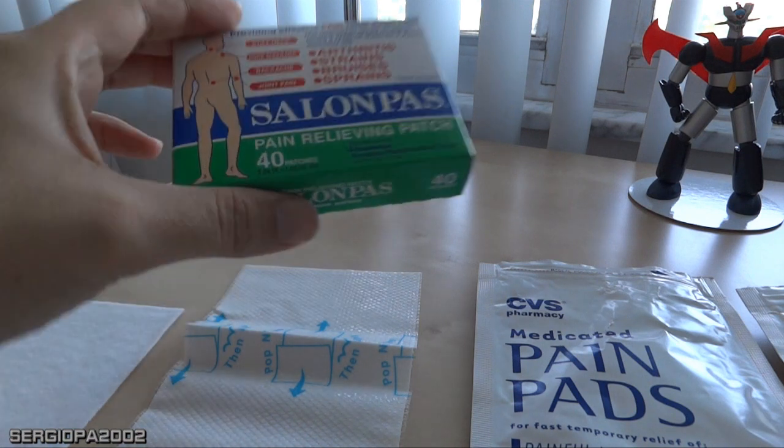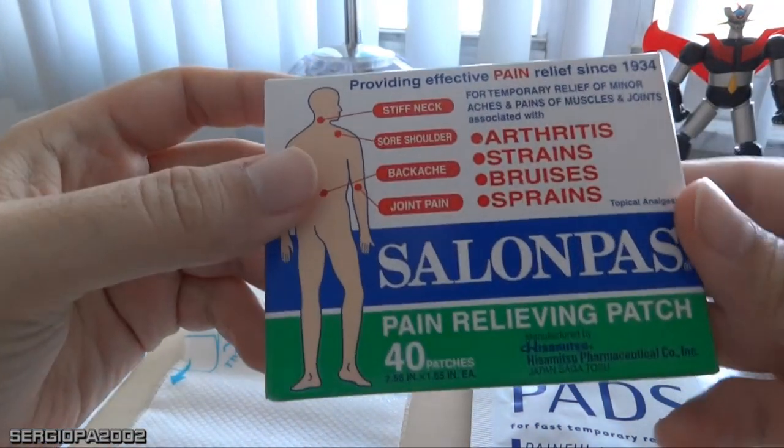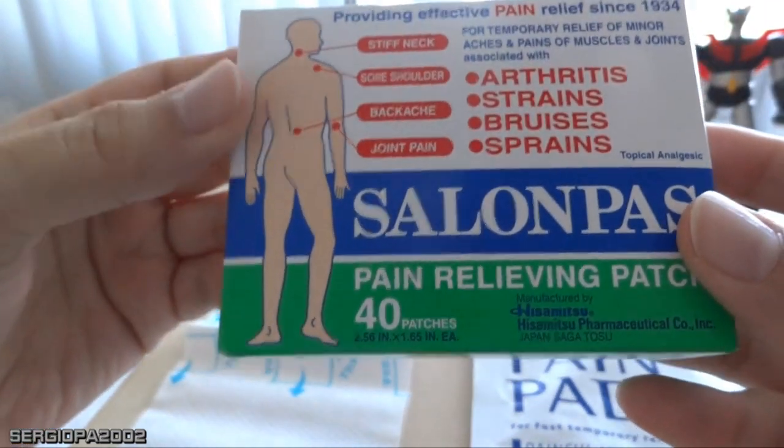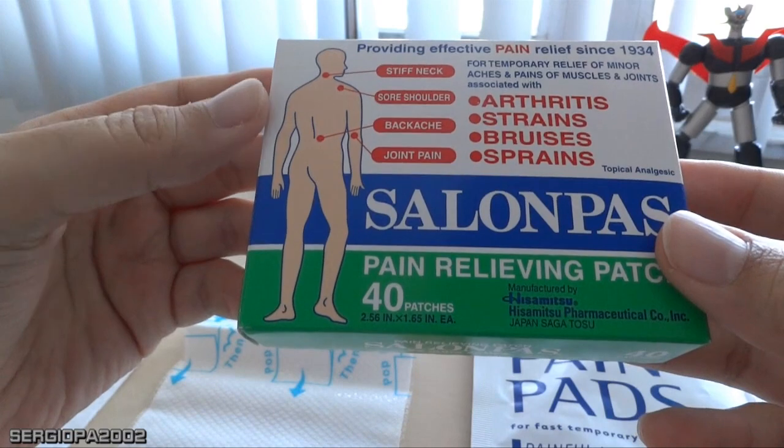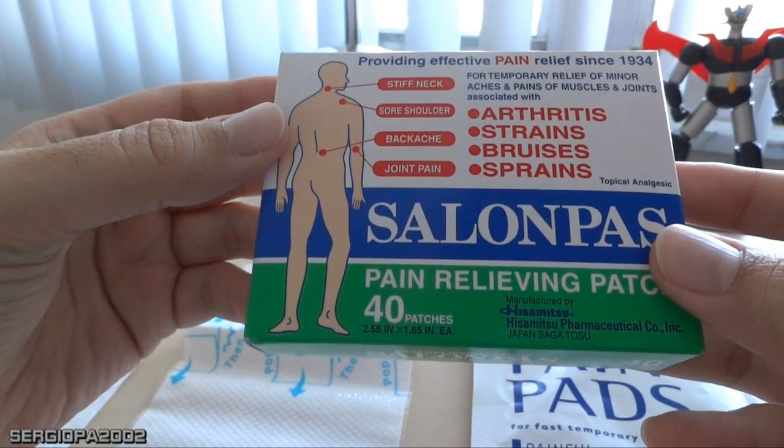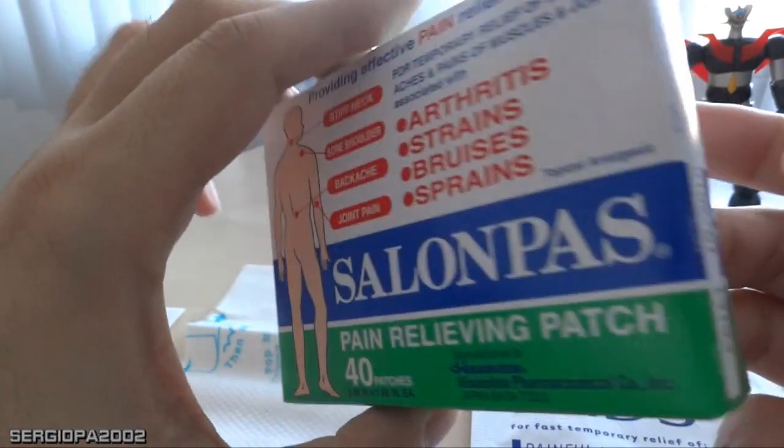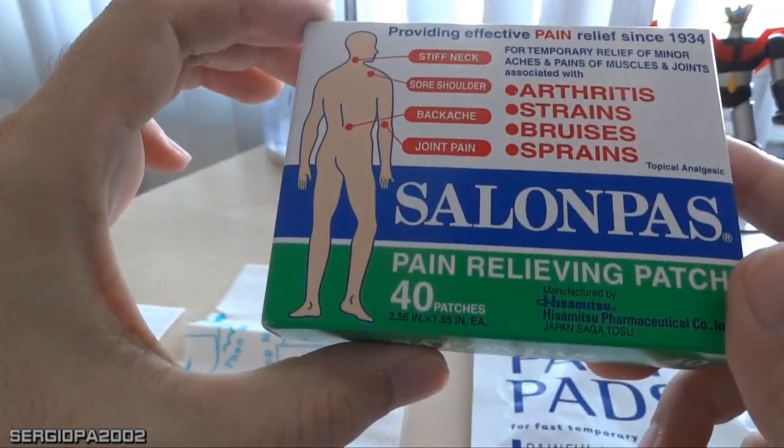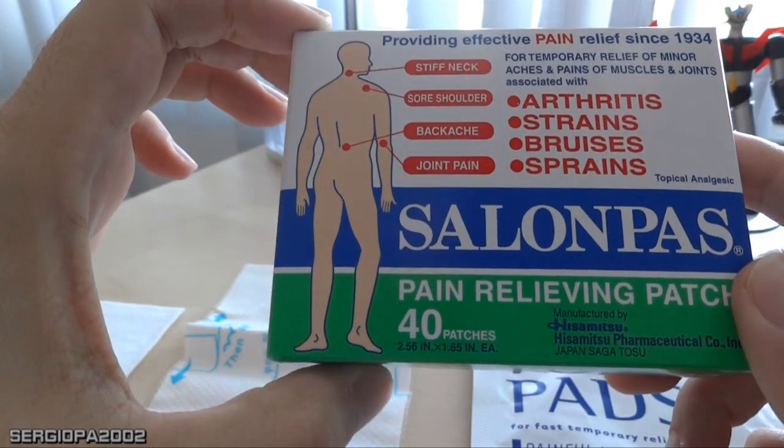The first one I want to discuss is this Salonpas. This brand is made in Japan, as you can see. You can find it in any drugstore. I buy them in Costco—they have a big box and sell them in bulk for a cheap price, but normally you can find it in CVS or any place.